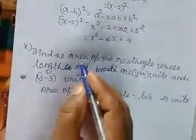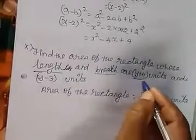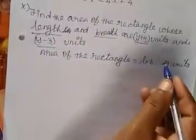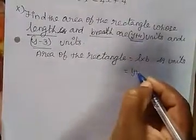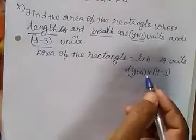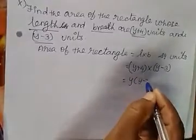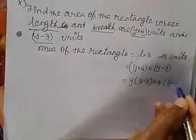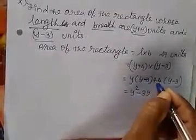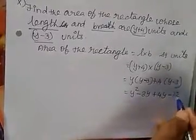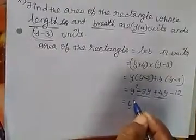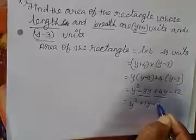Next, the last sum, tenth sum: find the area of the rectangle whose length and breadth are (y + 4) units and (y − 3) units. Area of rectangle = length × breadth. So we multiply (y + 4)(y − 3): y × y = y², y × (−3) = −3y, 4 × y = 4y, 4 × (−3) = −12. Combining like terms: 4y − 3y = y. So the answer is y² + y − 12.